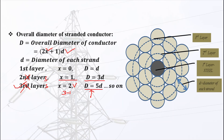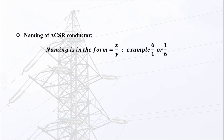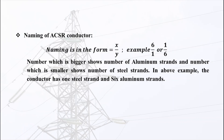Now we will discuss the nomenclature of a composite stranded conductor. The naming is given as a fraction x/y, for example 6/1 or 1/6. The larger number denotes the number of aluminum strands, and the smaller number denotes the number of steel strands. So in 6/1, there are 6 aluminum conductors that carry current and 1 steel conductor for tensile strength.